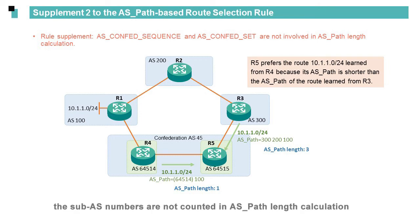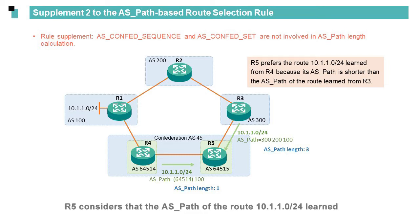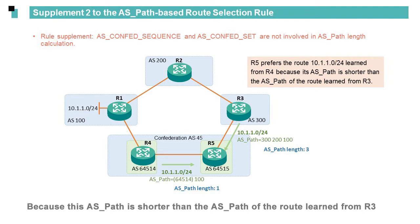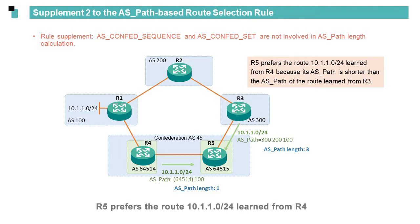In the topology shown on this slide, R5 considers that the AS path of the route 10.1.1.0/24 learned from R4 contains only one AS number. Because this AS path is shorter than the AS path of the route learned from R3, R5 prefers the route 10.1.1.0/24 learned from R4.